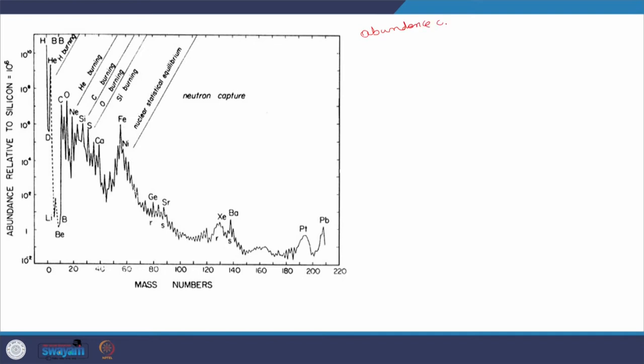I have shown this abundance curve a good number of times in the initial stage of the course. Now we are going to analyze it from a different perspective — the quest for trans-iron elements and the synthesis of elements beyond iron.